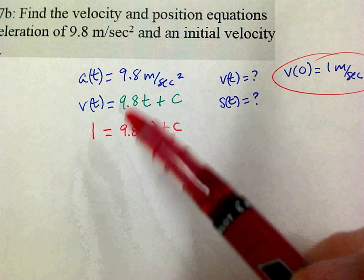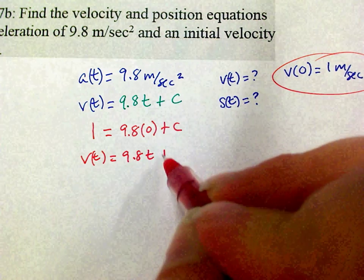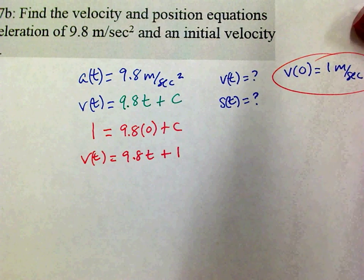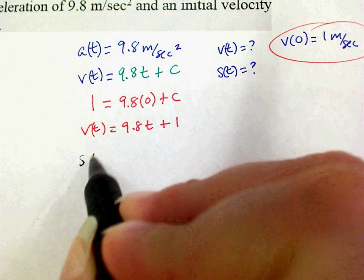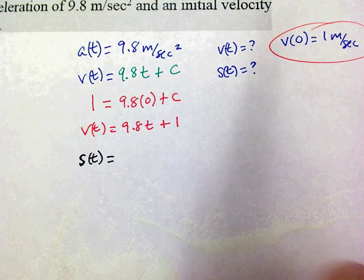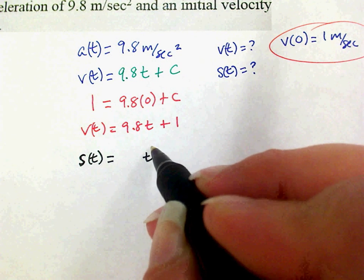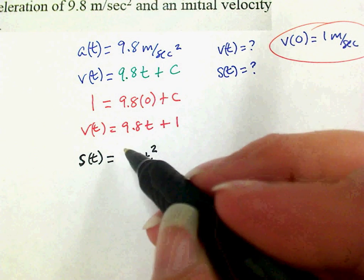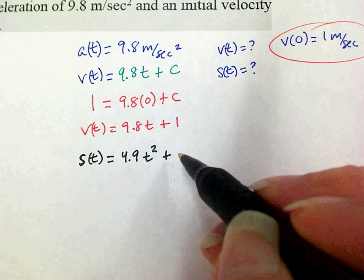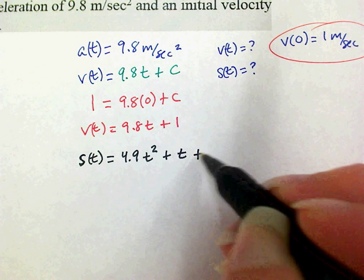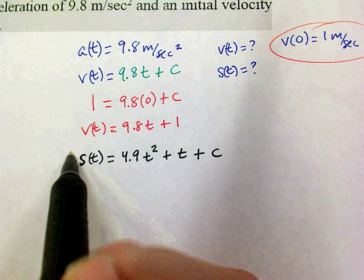Now what do I want to do? Find position. So what's the antiderivative of 9.8t? Well, I know it's got to be t what? Squared. So 2 times what gives me 9.8? 4.9t squared plus - what's the antiderivative of 1? t in this case, and then plus c. I cannot do anything else with it because they didn't give me another - they didn't give me an initial position or a position term, so I can't find the specific position function, so I'm done.